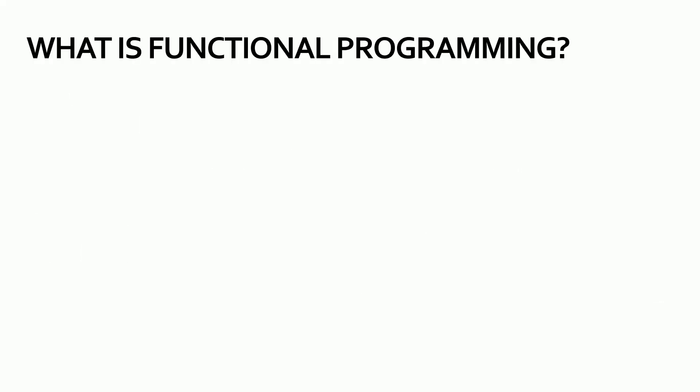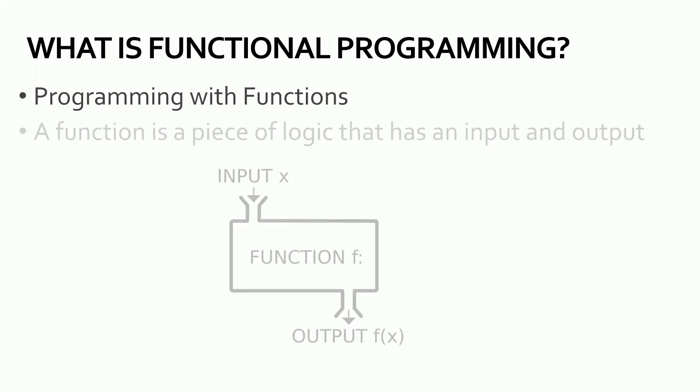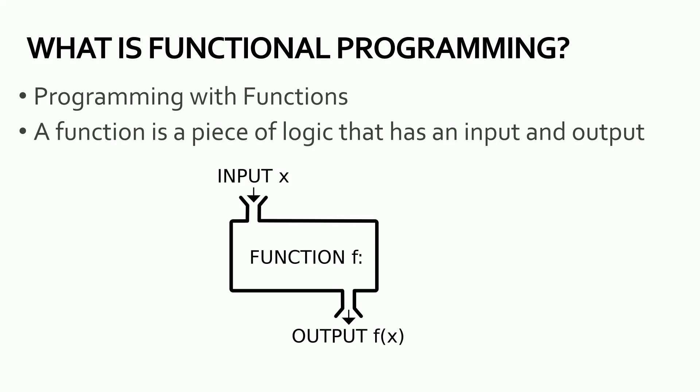So the question is: what is functional programming? Simply put, it's just programming with functions. But more importantly, it's programming with mathematical functions. A function is just a piece of logic that has an input and an output — it maps an input to a definite output. Understanding this as the basic building block of how you write programs is essentially what makes functional programming so powerful.